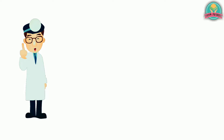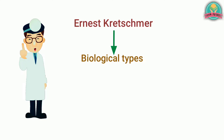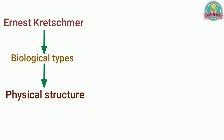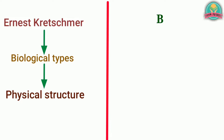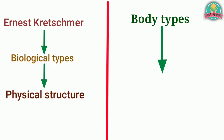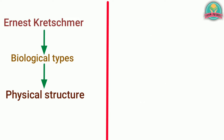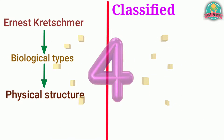German psychologist Ernest Kretschmer classified all human beings into certain biological types according to their physical structure. From his studies on mental patients, he found that certain body types are associated with particular types of mental disorders. He has classified personalities into four types.